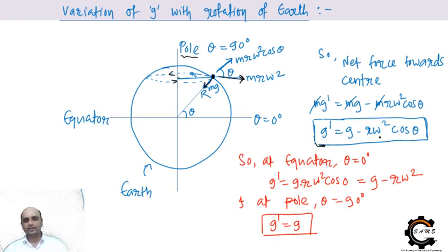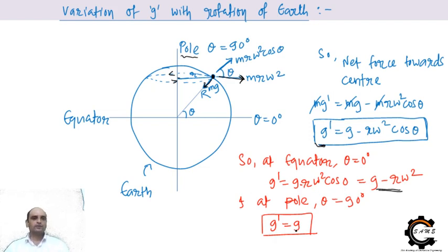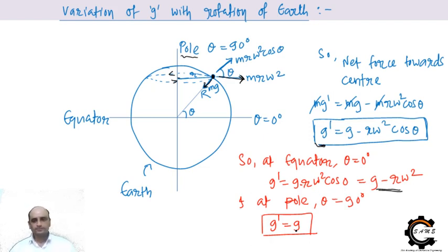Because of Earth's rotation, there is variation in acceleration due to gravity. At the pole, the distance r from the axis of rotation is zero, so the centrifugal term vanishes and g remains maximum. At the equator, r is maximum, so g is reduced to g' = g − Rω². Therefore, gravitational acceleration is highest at the poles and lowest at the equator.